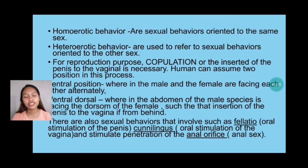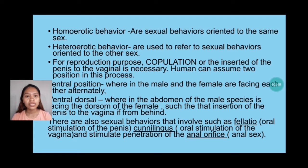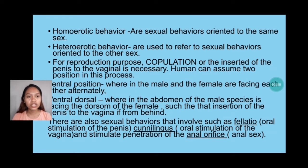Humans can assume two positions in this process. One is the ventral position, wherein the male and the female are facing each other — this is the common position used for having sex. The second is ventral-dorsal, wherein the abdomen of the male is facing the dorsum of the female, with the male at the back of the female, such that insertion of the penis into the vagina is from behind. There are also sexual behaviors that involve fellatio — oral stimulation of the penis — cunnilingus, oral stimulation of the vagina, and anal penetration, typically practiced by males.